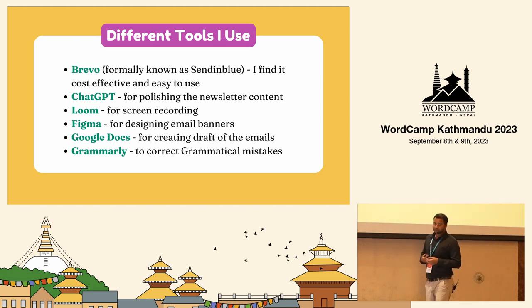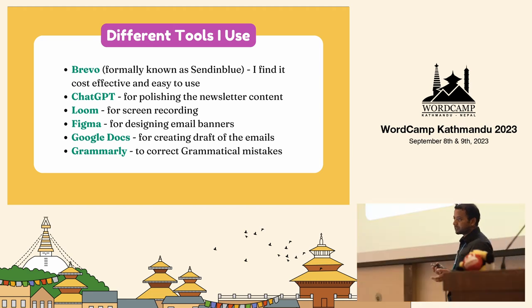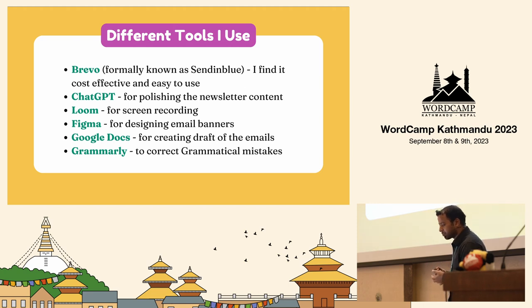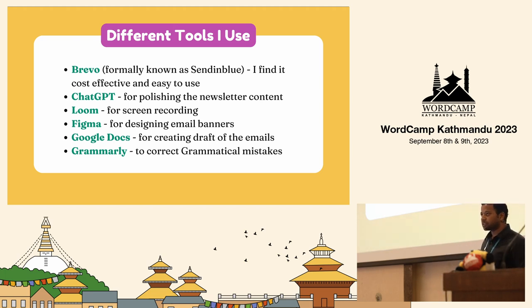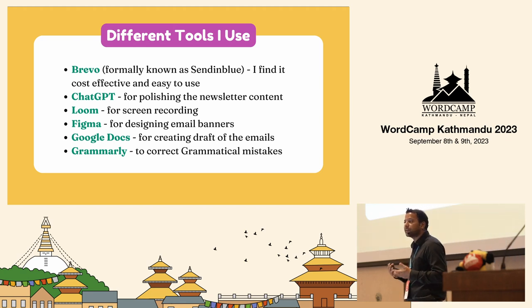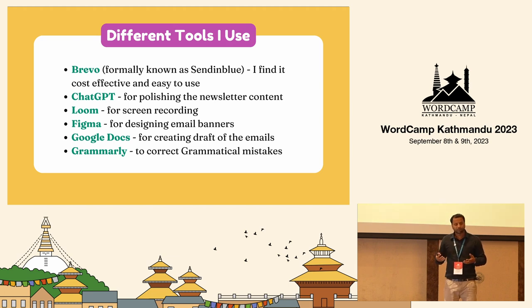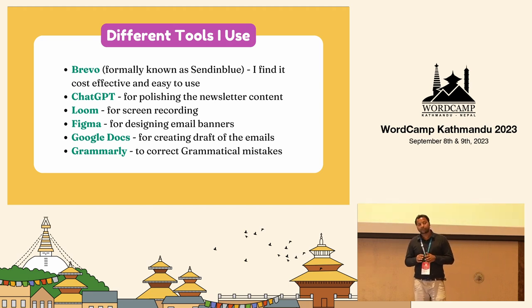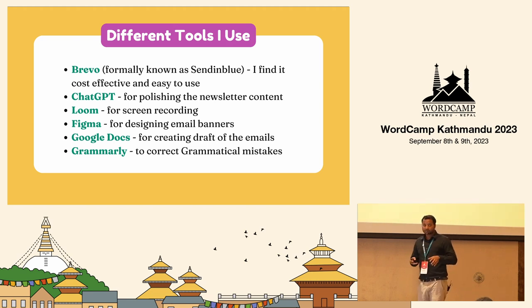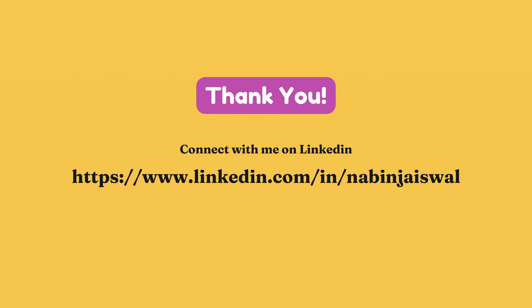There are different tools that you can use, and here are some of the tools that I use. I use Brevo, formerly known as Sendinblue, for managing or sending my email campaigns — I find it very easy to use and cost effective, and I have been using it for more than three years. I write all my email content first in Google Docs, fix grammatical mistakes using Grammarly, and use ChatGPT to fine-tune the email content. In some email templates, we also send a video link, so for that purpose we use Loom for recording tutorials. For creating different kinds of creative banners for the email campaign, we use Figma.